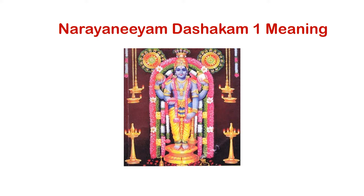Dashakam 1 is what Bhattatri had read and interpreted from Srimad Bhagavatam. Dashakam 100 is when he sees the lord himself in front of him — that description, that experience. He says 'Romanchi thang' — his hairs are standing, he cannot believe he is seeing the lord. Luckily, because he was Bhattatri, he at least stayed there. If it were one of us, we would run away even if the lord came in front of us.